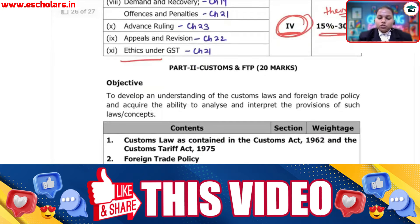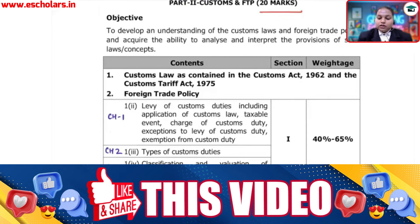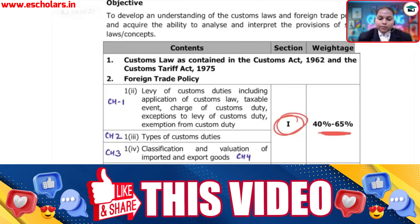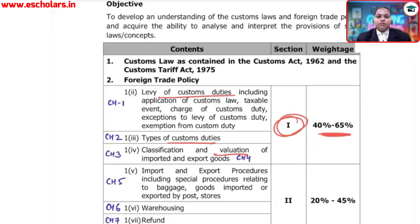For Customs, which is 20% of total marks across 8 chapters — Section 1 carries 40% to 65% weightage. It covers Chapter 1: Levy of Custom Duty, Chapter 2: Types of Custom Duty, and Valuation. As seen in the ABC analysis, Valuation is Category A, meaning it is a commonly asked topic. You need to focus on both GST valuation and Customs valuation.